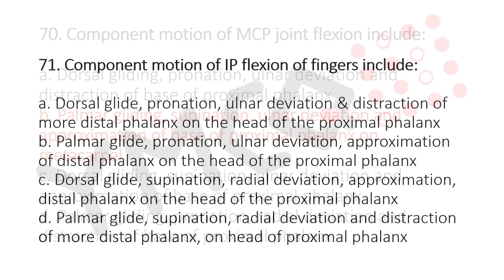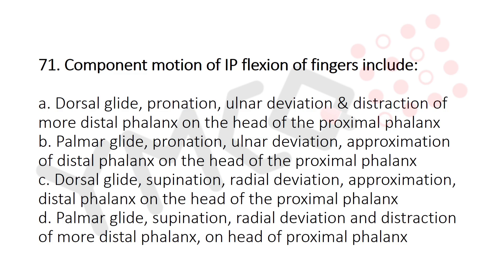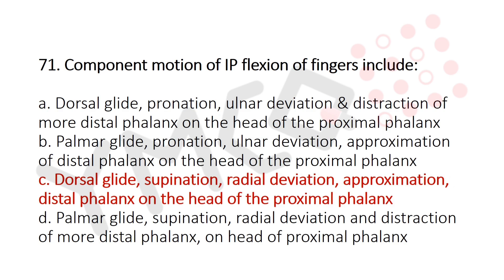Question 71: The component motion of IP flexion of fingers includes — Option A: dorsal gliding, pronation, ulnar deviation and distraction of the distal phalanx from the head of the proximal phalanx; Option B: palmar gliding, pronation, ulnar deviation and approximation; Option C: dorsal gliding, supination, ulnar deviation and approximation of the distal phalanx on the head of the proximal phalanx; Option D: palmar gliding, supination, ulnar deviation and distraction. The answer is Option C, dorsal gliding, supination, ulnar deviation and approximation of the distal phalanx on the head of the proximal phalanx.